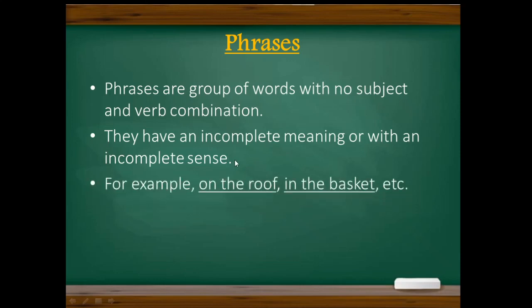Now, let us see an example based on these two definitions. For example, group of words like 'on the roof', 'in the basket' — these are groups of words. In these groups of words, we don't have any subject or a verb. They don't have a complete meaning in themselves; it's with an incomplete sense. So 'on the roof' — what is on the roof? What is happening on the roof? We don't know. Hence, it's with an incomplete meaning.